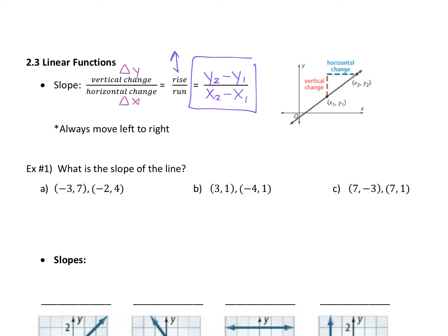So you're going to use that a lot with slope. The change in your y value over the change in your x value — the rise, so up and down, over the run. And we always run to the right. You can go up or you can go down, but we will always move to the right to calculate it, just to keep consistency. That's how we'll find slope — basically how far did we go up and how far did we go over? Vertical change over horizontal change.